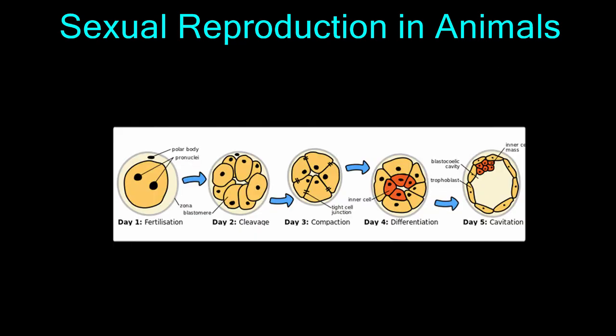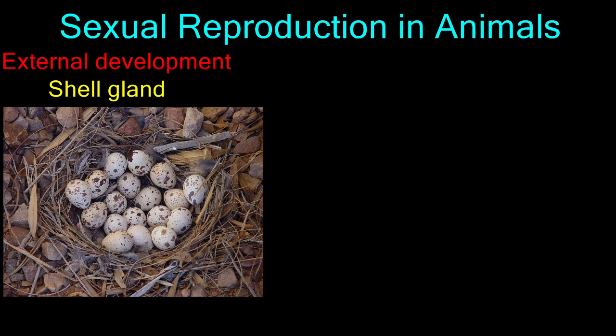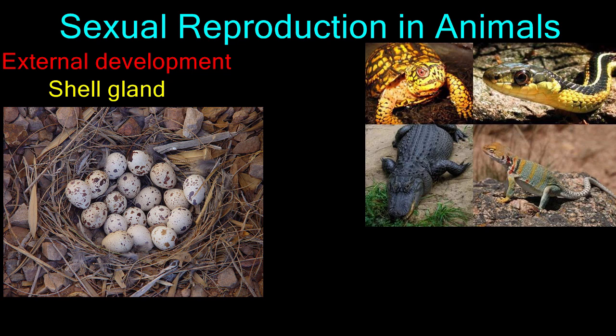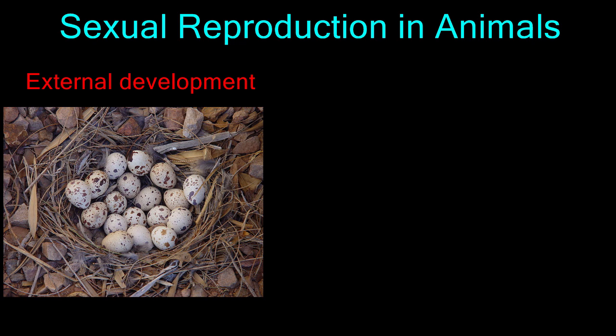Once fertilization has occurred, the zygote will undergo mitosis and begin developing into an embryo. In some animals, the embryo will complete its development inside a hard shell laid by the female after mating. The shell gland in the female allows her to produce the shell that protects the embryo from drying out. The hard shell made external development on land possible for animals like turtles, crocodiles, snakes, birds, and even some mammals like the spiny anteater and platypus. Hardened shells are an adaptation allowing an embryo to complete its development outside the female body while still being protected from the dry conditions of a land-based habitat.